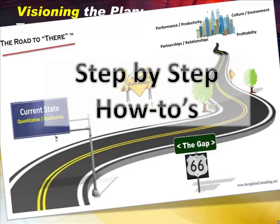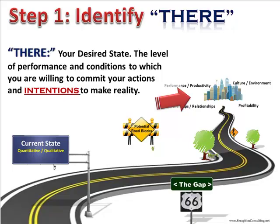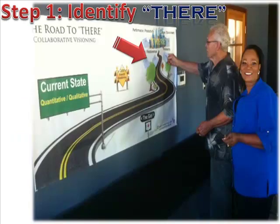Here are your step-by-step how-to's. The first step is to identify there — your desired state, the level of performance and the conditions to which you are willing to commit your actions and intentions to make reality. This is your first step in the brainstorming process.